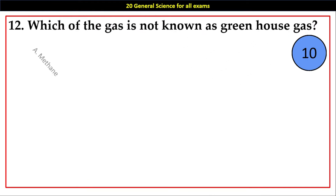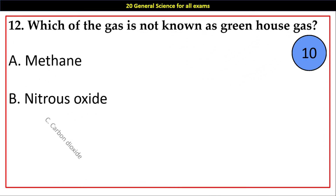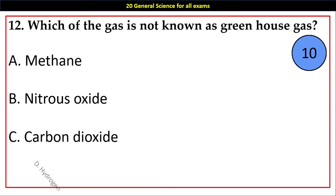Question number 12. Which of the following gases is not known as a greenhouse gas? Options A. Methane, B. Nitrous Oxide, C. Carbon Dioxide, D. Hydrogen.